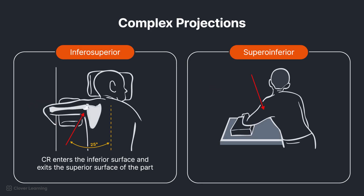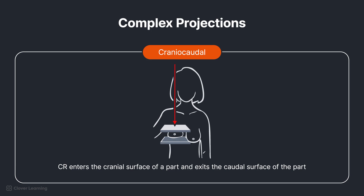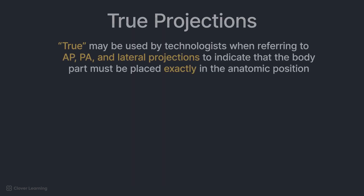Additional complex projections include: Inferosuperior — CR enters the inferior surface and exits the superior surface of the part. Superoinferior — CR enters the superior surface and exits the inferior surface of the part. These projections are commonly used for inlet or outlet views of the pelvis and the axillary region of the shoulder. Finally, Craniocaudal — CR enters the cranial surface of a part and exits the caudal surface. This projection is primarily used in mammography.